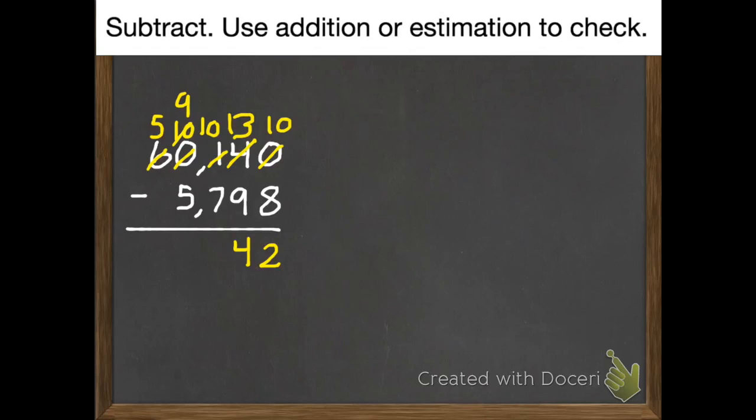Now we're good to go. 10 subtract 7 is 3. 9 subtract 5 is 4. And 5 subtract nothing is 5.